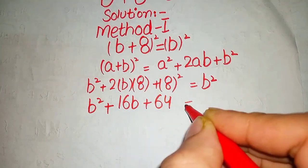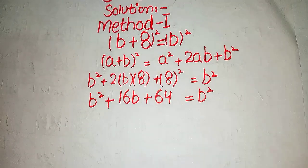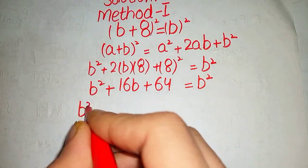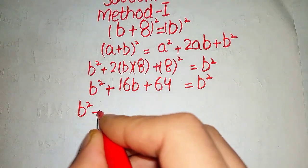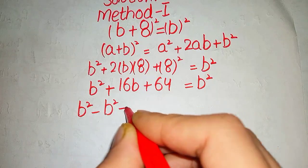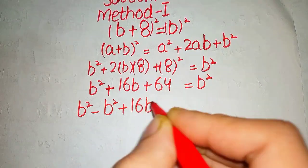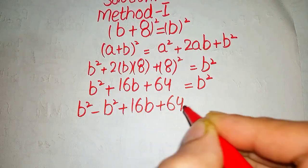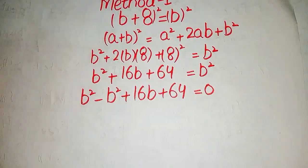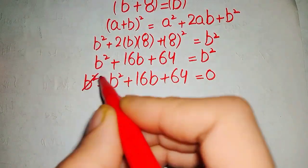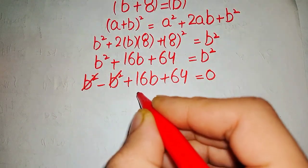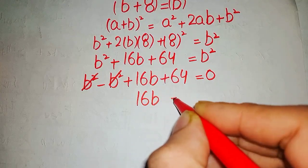When we take this b square to the left side it would become b square minus b square plus 16b plus 64 equals to 0. This b square cancels with this one and we got 16b equals to 64.